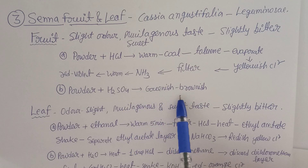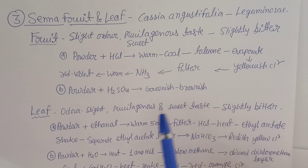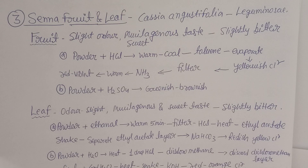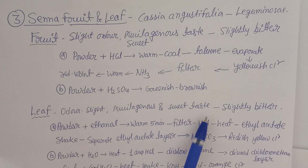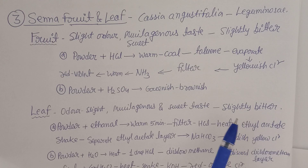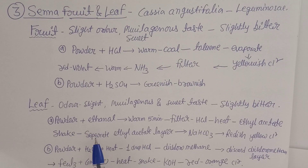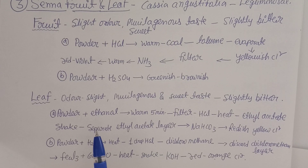Senna leaf is also very popular as an important purgative. The organoleptic characteristics of the leaf — slightly mucilaginous, sweet taste with slight bitterness — are almost similar to the fruit. For the chemical test, take the leaf powder, add ethanol, warm for five minutes, then filter.